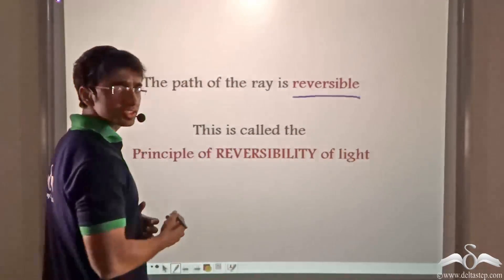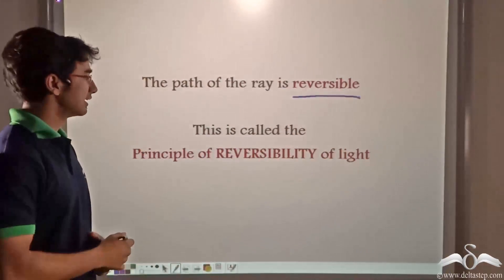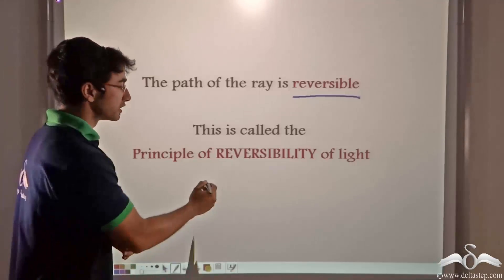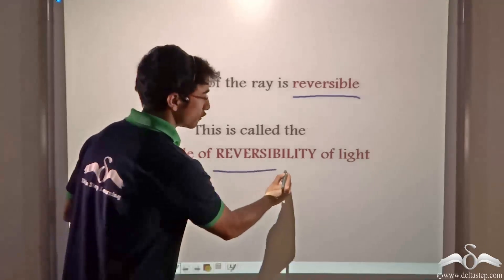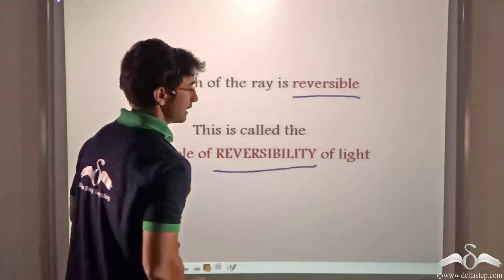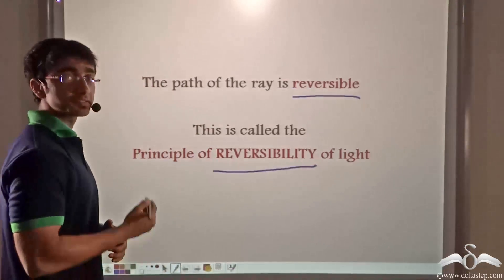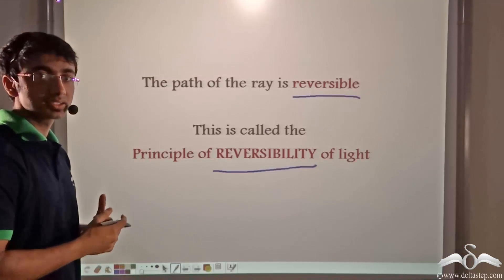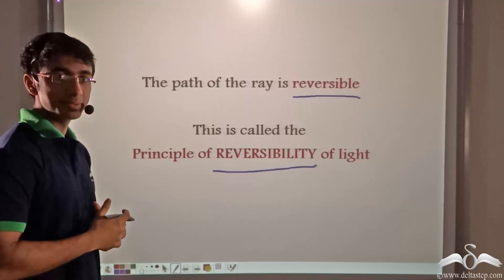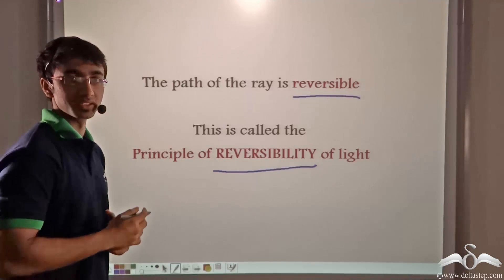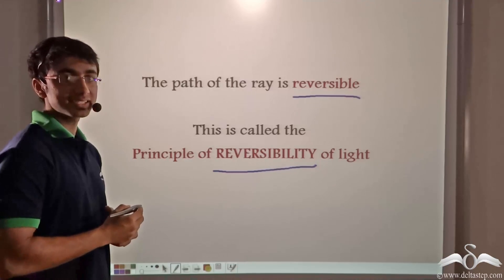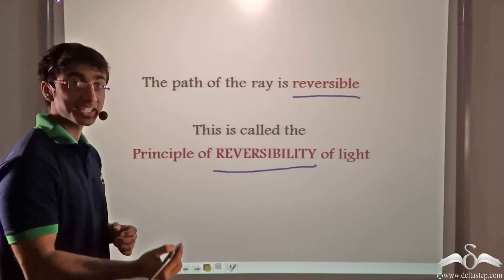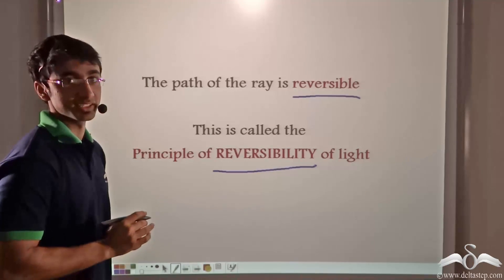This shows us that the path of the rays is reversible. So what is this known as? This is known as the principle of reversibility of light. The principle of reversibility of light states that the path of a light beam can be reversed — that is, even though the path remains the same, the direction is changed.